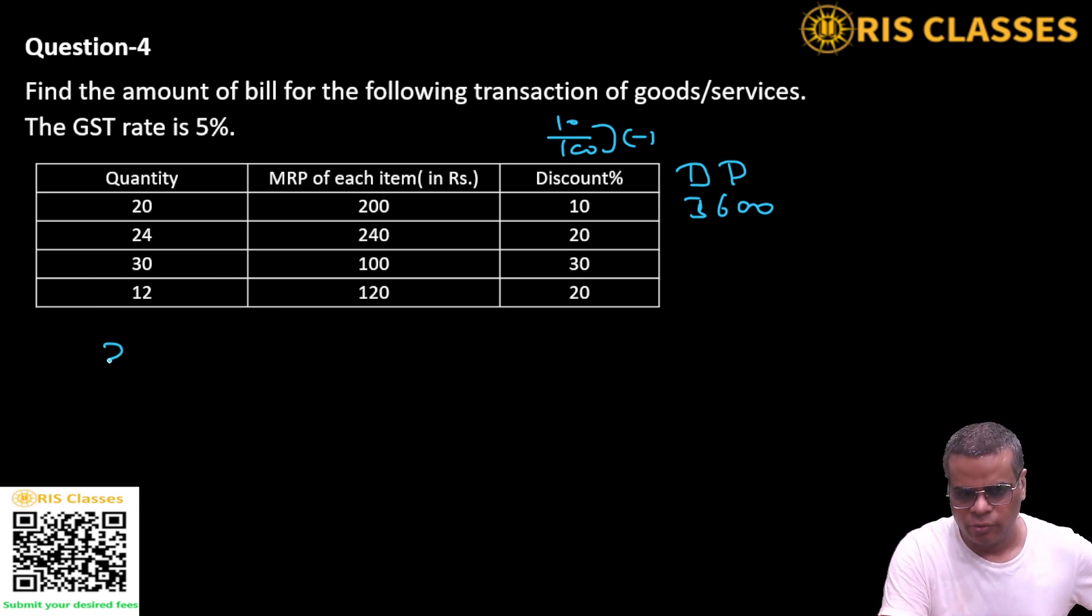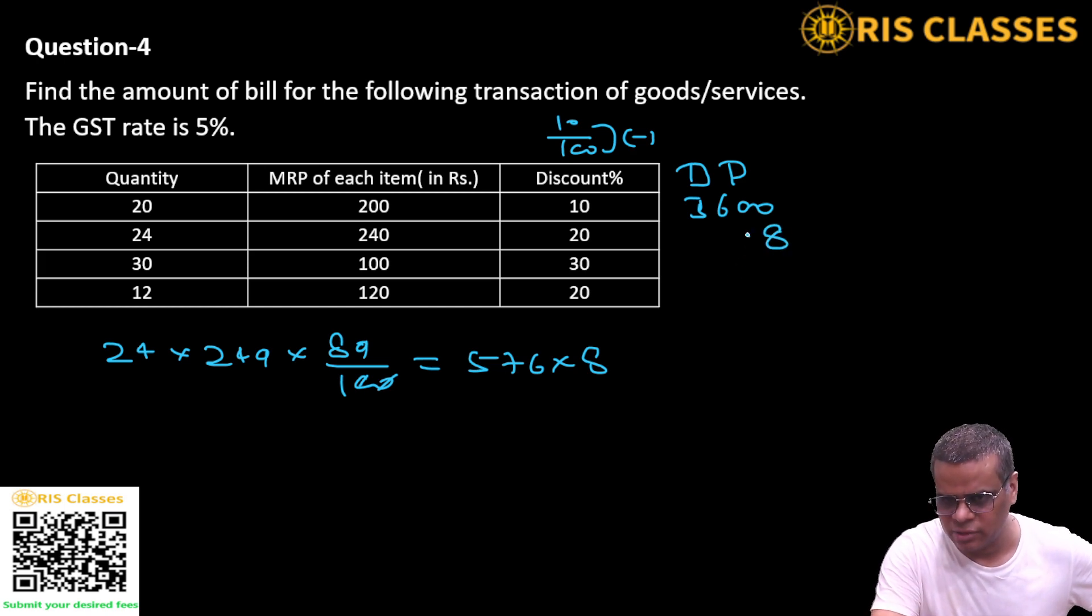24 number of items, 240 price of each item, 20% discount. 80 by 100. Two zeros cancel. 24 into 24 is... 576 or into 8, 8, 6 of 48 carry... 4608.